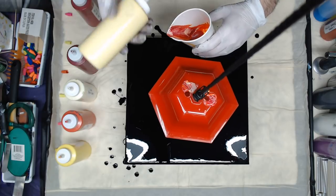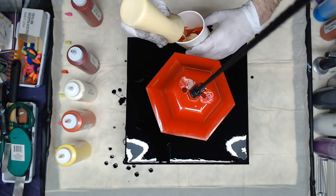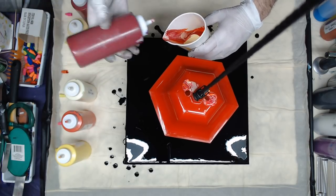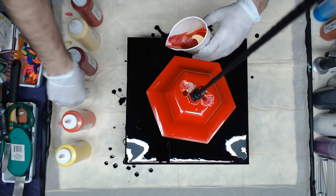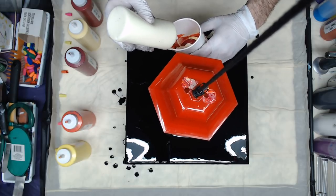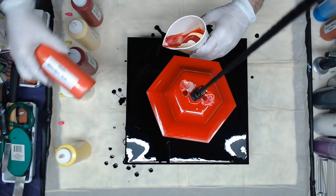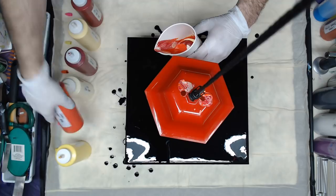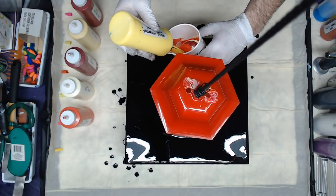That was the Azo Red Deep from Soho. The Artist Loft Naples Yellow. A splash of the Crimson from Soho. Lucas Pastel Yellow. The Brilliant Red. And then the Creative Inspirations Lemon Yellow.